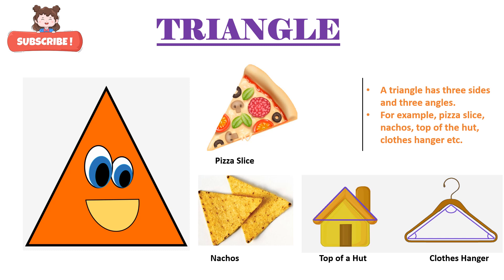Now let's learn about the properties of triangle. A triangle has 3 sides and 3 angles. For example, pizza slice, nachos, the top of a hut is also in the shape of a triangle, clothes hanger, etc.